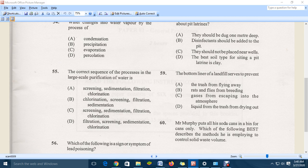The correct sequence of process in the large-scale purification of water: screening, sedimentation, filtration, chlorination. Chlorination at the first, screening, sedimentation, filtration, filtration, chlorination. And we have filtration, screening, sedimentation, chlorination.